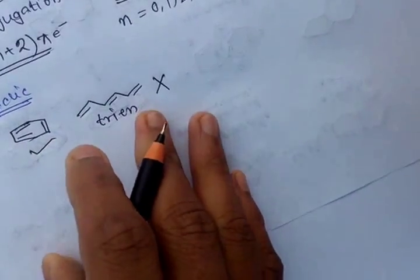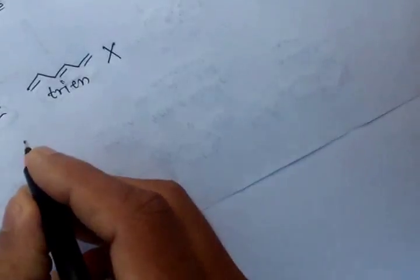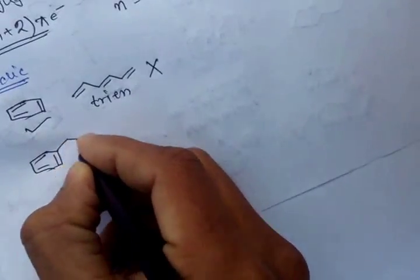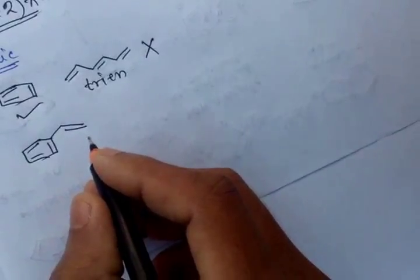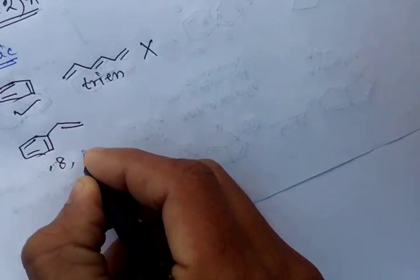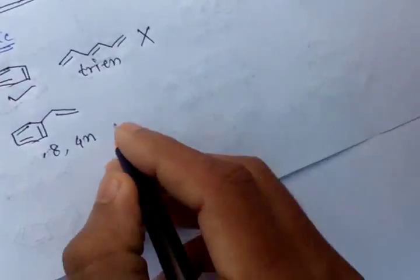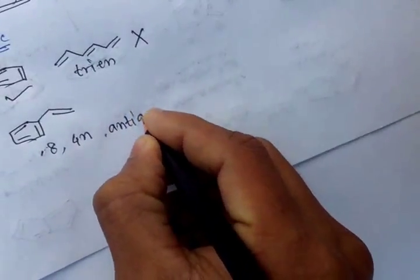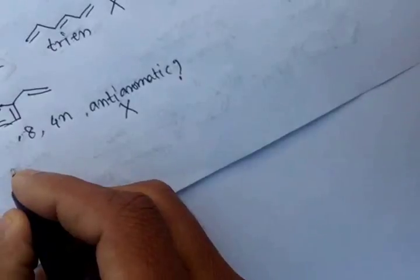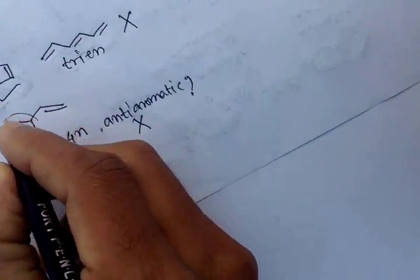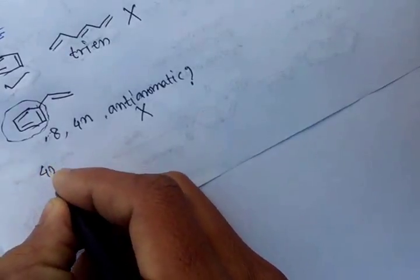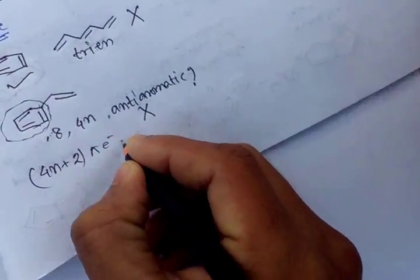For aromaticity, consider only cyclic compounds. If we count the total number of pi electrons — here it is 8, which is a multiple of 4n — but for aromaticity we consider only the cyclic part. That cyclic part follows 4n+2 number of pi electrons, that is 6 electrons, so it is aromatic.